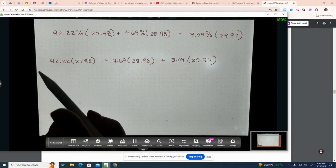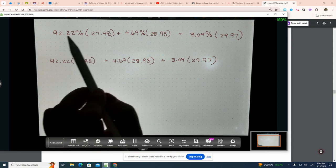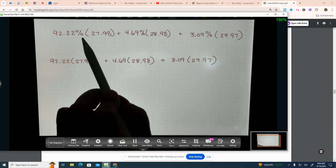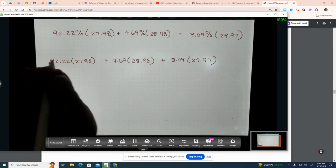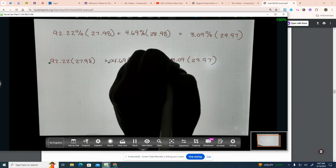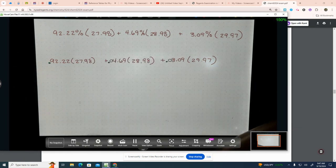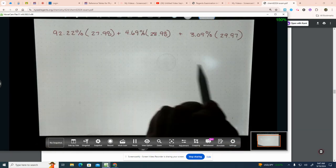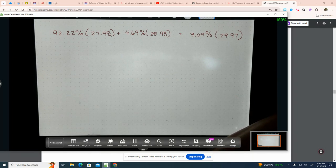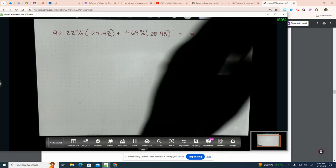If you write this 92.22 times 27.98 plus 4.69 times 28.98 plus 3.09 times 29.97, it will be marked wrong. And the reason it will be marked wrong is because you're not indicating these are percents. So be careful of that. If you leave the percent sign on, you can leave them. If you don't leave the percent sign on, you must move that decimal two places to the left. See the difference?